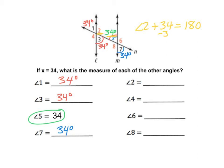If we do 180 minus 34, that means that angle 2 is 146. We know that angle 4 is also 146 degrees because it's vertical with angle 2.